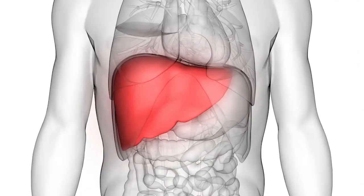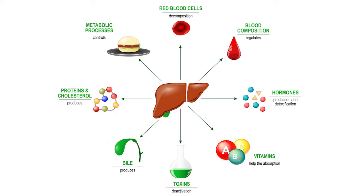So what does the liver do? The liver is the largest organ inside your body. It's located on the right side under your ribs. It functions to store energy, iron, and vitamins. It makes proteins that are essential for your blood to clot, and it removes alcohol, medications, and poisons from your body. It helps digest food by making a juice called bile, which breaks down fats that are in our diet.